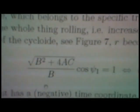So, in the graph of the cycloid, which we have seen in figure 7, R becomes 0 at the point C.